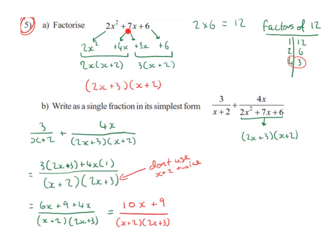Factorize 2x squared plus 7x plus 6. We have a quadratic equation and the coefficient of x squared is greater than 1. We are going to factorize by grouping.